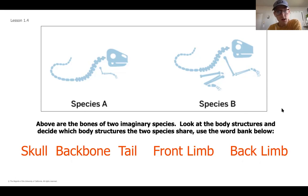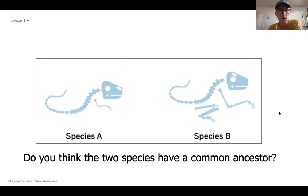All right. So if you started to think about these two species, what are things that they have in common? And starting to think about would they have a common ancestor? We want to look at those structures in their body that are similar. So hopefully you notice they both have a skull.